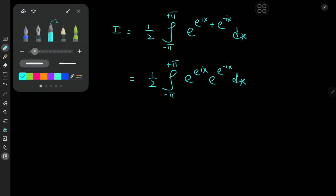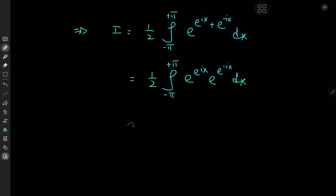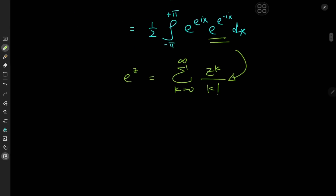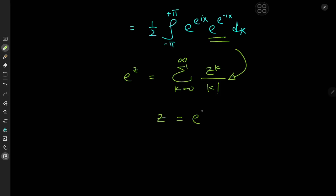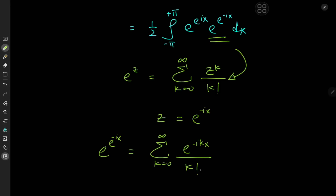And now to invoke a beautiful series expansion for the exponential function. We know that e to the z can be expanded as the sum over the non-negative integers k of z to the k divided by k factorial. What I'm going to do is expand the term e to the e to the negative ix in this series notation, setting z equal to e to the negative ix, which gives e to the e to the negative ix expanded as the sum over k of e to the negative ikx divided by k factorial.